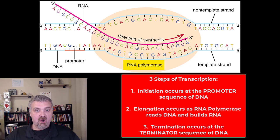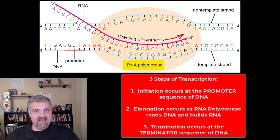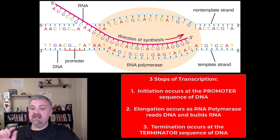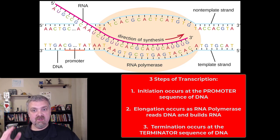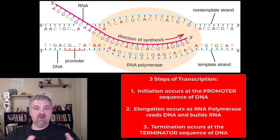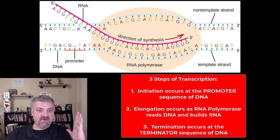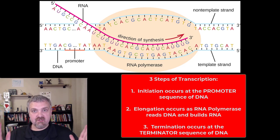Elongation is just RNA polymerase reading DNA and putting the corresponding piece of RNA together, until we get to the terminator sequence of DNA, which says stop. So at the end, we're going to have a piece of RNA that ran from the promoter sequence of DNA to the terminator sequence of DNA.